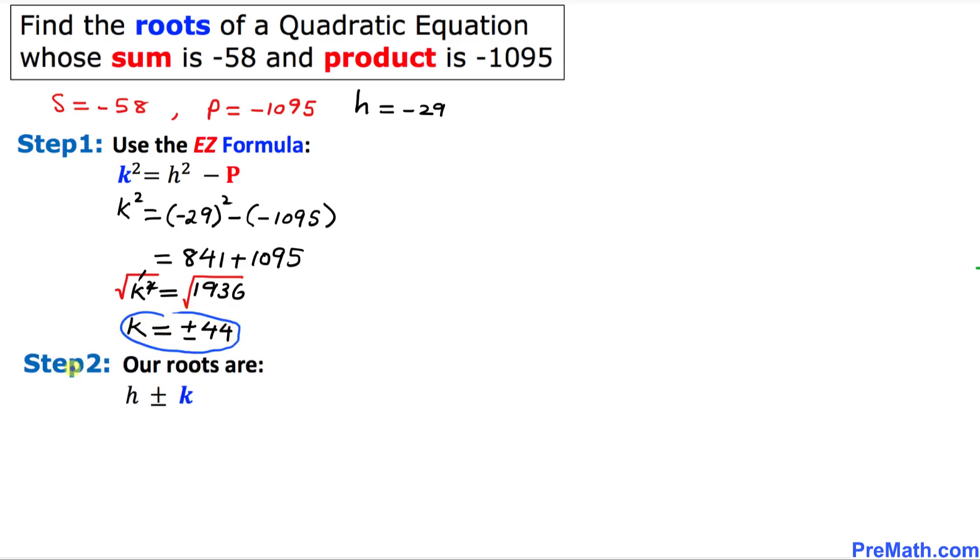And here is our final step. Our roots are going to be H plus or minus K. In our case H is negative 29. Let's write it down: negative 29 plus or minus 44. And that is our answer.